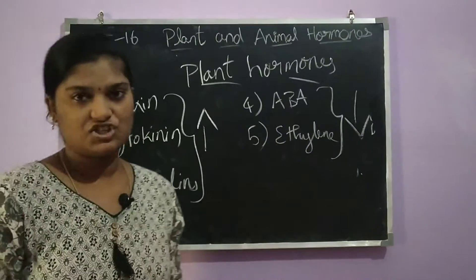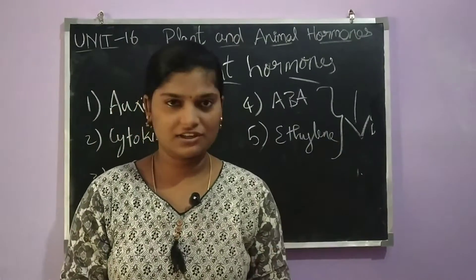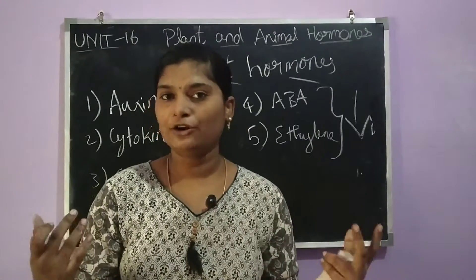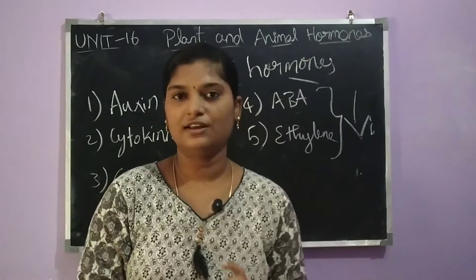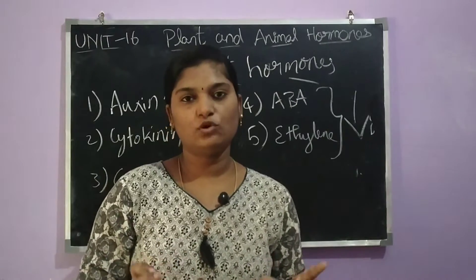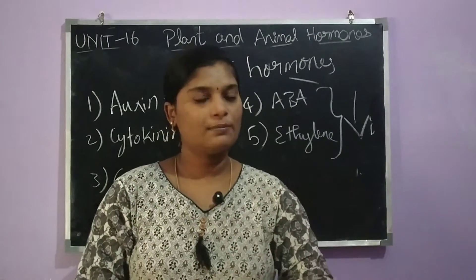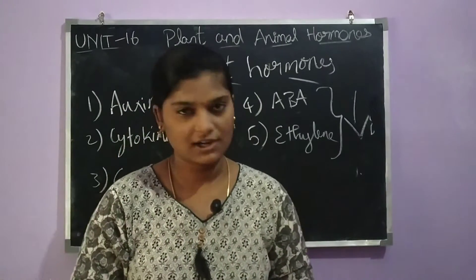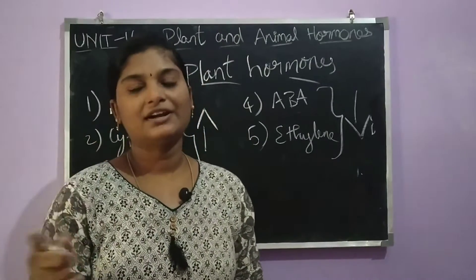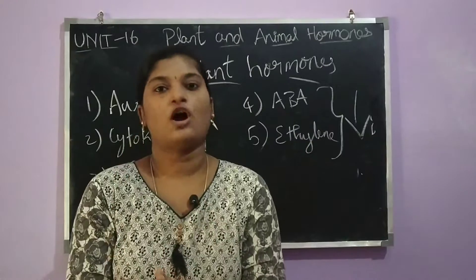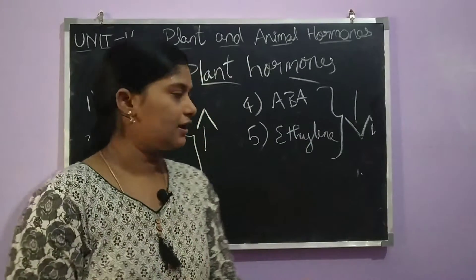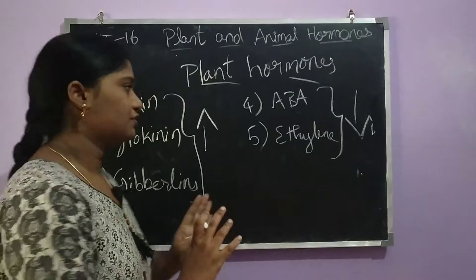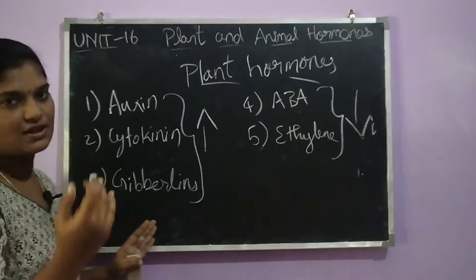The unfavorable conditions are when the climate is very hot and there is no water supply. Under such unfavorable conditions, the plant will not grow. So we are going to discuss about these five hormones in this segment.